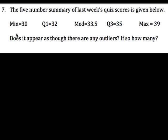All right, here's one more example before I can move on for today. So we basically have the five-number summary for last week's quiz scores. The min is 30, Q1 is 32, the median is 33.5, Q3 is 35, and the max is 39.